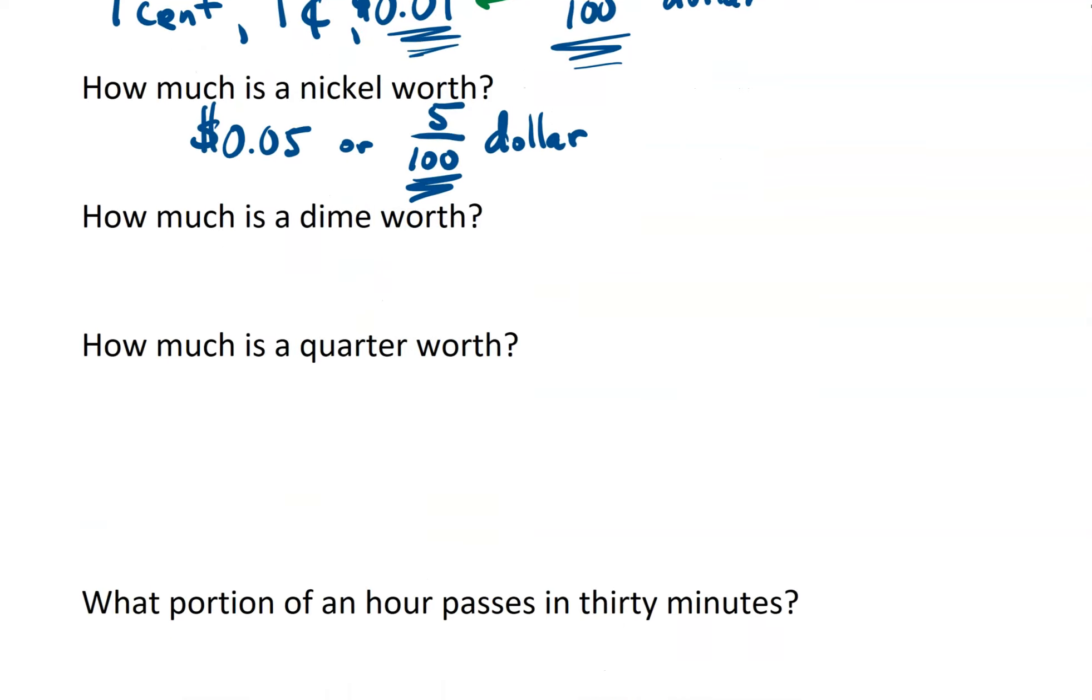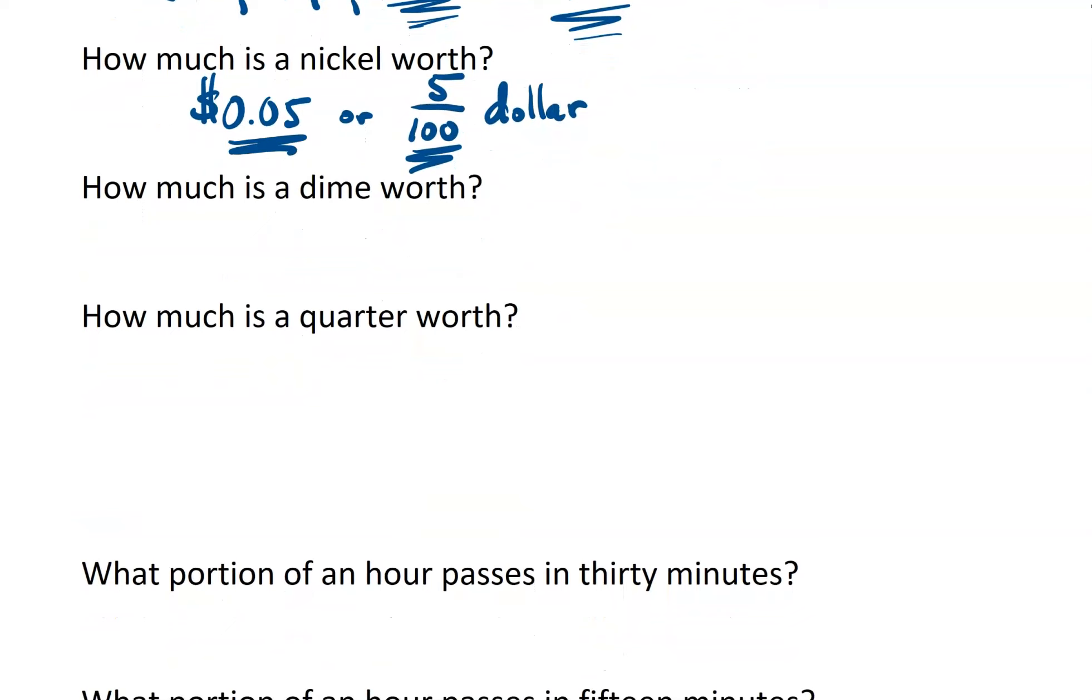Now if you're wondering where the fraction is coming from, let's take note here, that in the decimal positions, we have a tenths place and a hundredths place. And since the decimal extended to the hundredths place, I can write this number 0.05, or just the number 5 in this case, over one hundred, and that's its fractional equivalent.